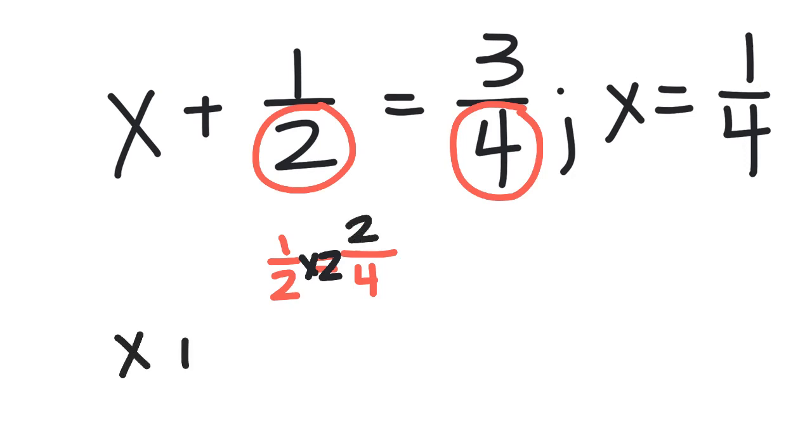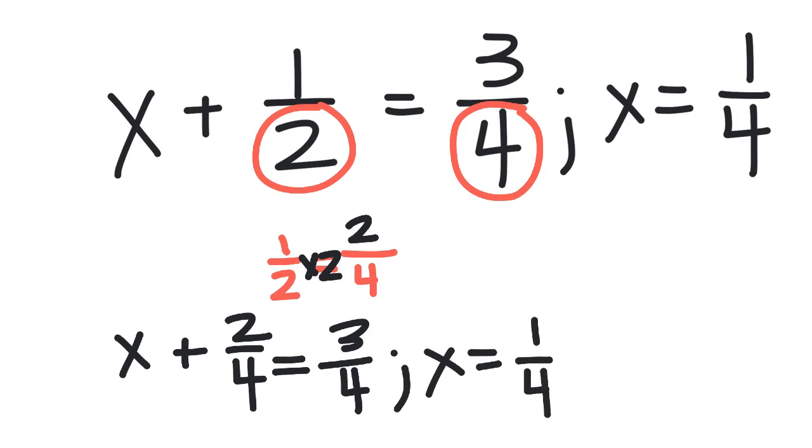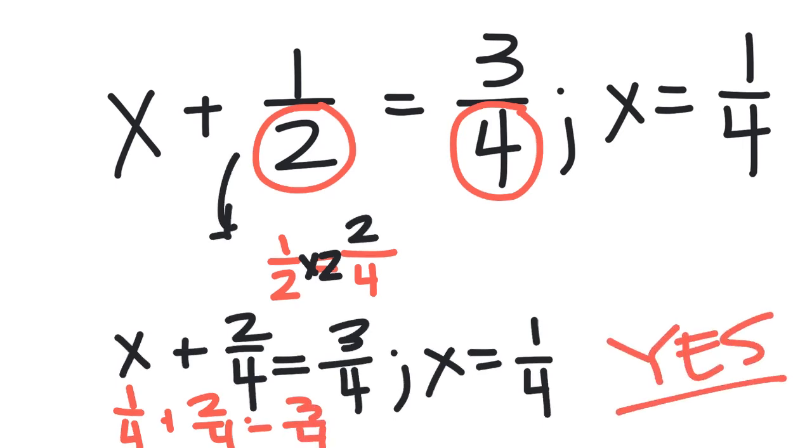So I'm going to rewrite x plus two fourths equals three fourths, and they're saying x equals one fourth. Now I can attempt to solve because all of my denominators are the same. So really this is no more difficult, I just had to do a quick common denominator switch to get all my denominators to be the same before I moved forward. So now if I were to plug in one fourth plus two fourths, does that equal three fourths? Yes, it does. So my answer would be yes.